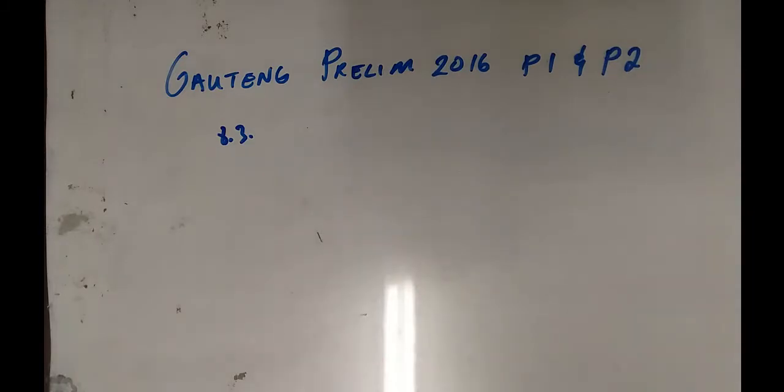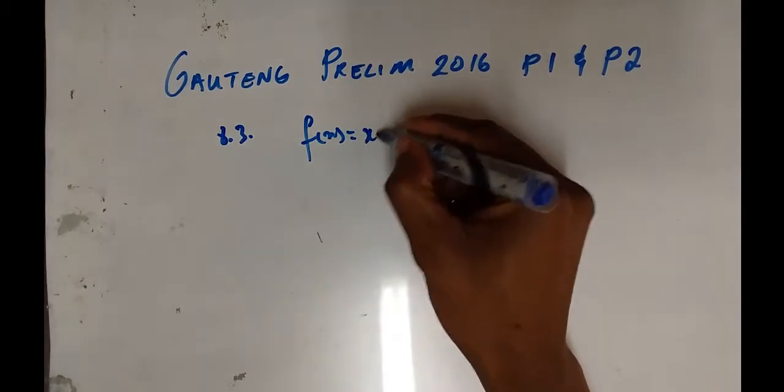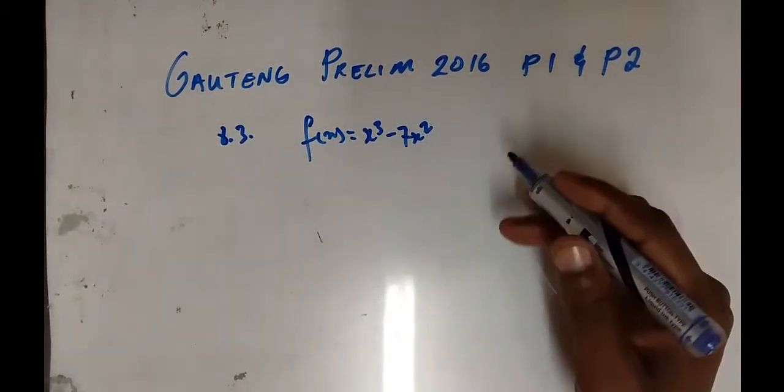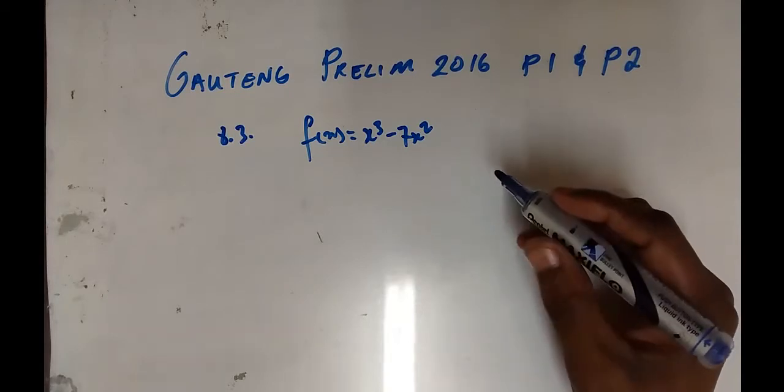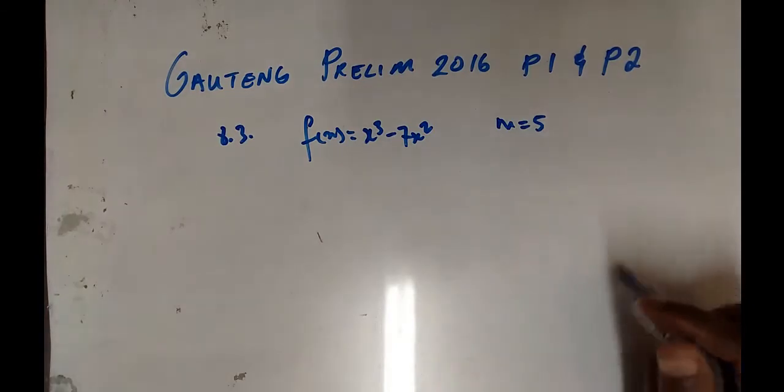on the graph of f(x), where f(x) = x³ - 7x², at which the gradient of the tangent to f equals 5.